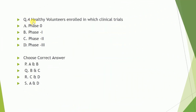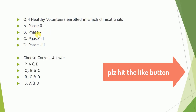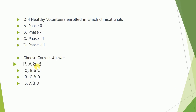Question number four: healthy volunteers enroll in which clinical trial? Options are A) phase zero, B) phase one, C) phase two, D) phase three. The correct answer is A and B — phase zero and phase one.